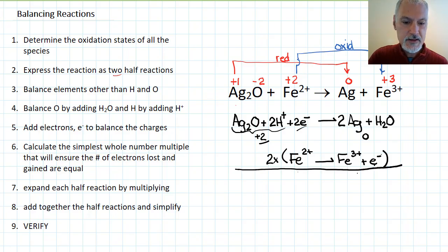I know right away that by doubling I'm going to be cancelling out my electrons. So if I take a look at what's left, I have the silver oxide, two hydrogens from the first equation and I'll have two iron 2+ forming two silver, a water molecule and two iron 3+.